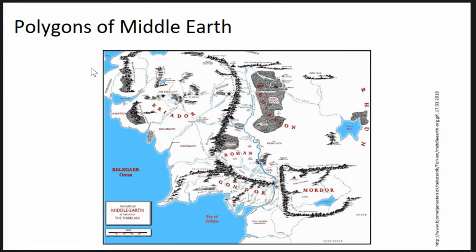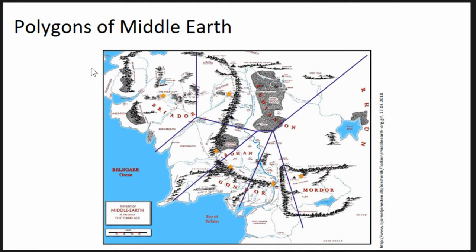If you look at Middle Earth, I looked at this map — which is readily available on the internet — and if you look at the ancestral seats and do a Voronoi tessellation of it, you get really interesting results. We see that there are problems, mostly edge effects, but we also see these stars representing the ancestral seats — Barad-dûr, Minas Tirith, and Hobbiton up there, although that's not actually a regional capital.